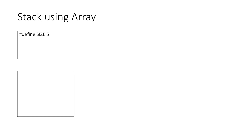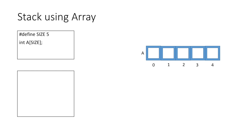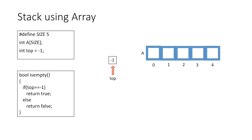Let's define the size of our stack as 5 using the preprocessor directive define — whenever we write size in our program it will equal 5. We create an array of 5 elements. Initially when the stack is empty, the top variable has the value minus 1. With this we define our isEmpty function, which returns true if top equals minus 1, otherwise false.